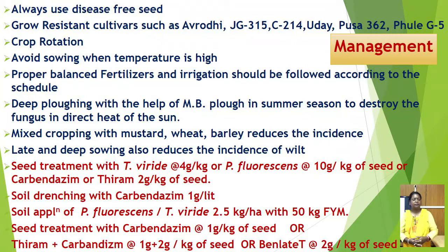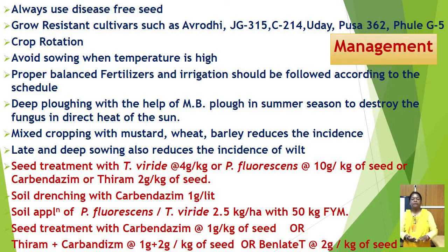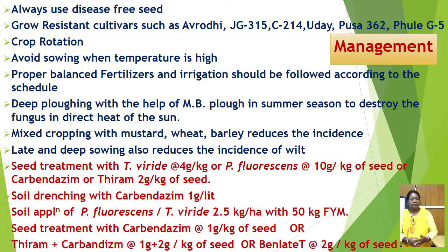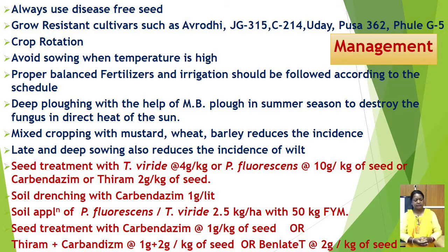For management, always use disease-free seed. Grow resistant varieties like Rodhi, JG 315, C214, Udaya, Pusa 362, Phule 5. Allow crop rotation for 5 to 6 years and avoid sowing when temperature is high. Use proper balanced fertilizer and follow irrigation schedules. Deep ploughing with a mold board plough in summer destroys the fungus through direct heat of the sun. Mixed cropping with mustard, wheat, or barley also reduces the incidence of disease. Late and deep sowing also reduces the incidence. These are cultural practices.